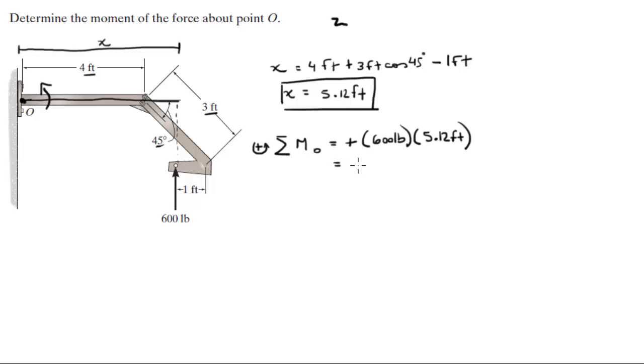And when you apply this into your calculator, this comes out to be 3072 foot-pounds, which is the same as 3.072 kip-feet.